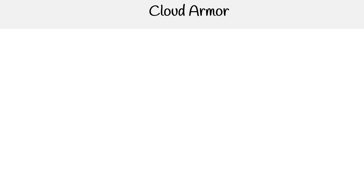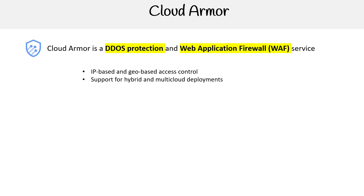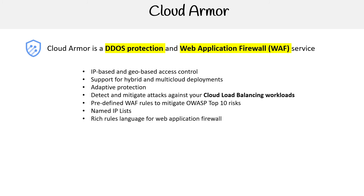Cloud Armor is a bit different from other cloud providers in that it does DDoS protection and it's also a web application firewall. These are usually separated as two different services with other providers, but GCP decided to roll it into one. Some of its feature sets are IP-based and geo-based access controls, support for hybrid and multi-cloud deployments, adaptive protection, detect and mitigate attacks against your cloud load balancing workloads, predefined WAF rules to mitigate OWASP top 10 risks, named IP lists, and a rich rule language for web application firewalls.